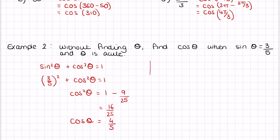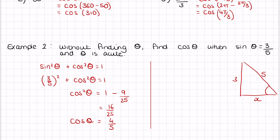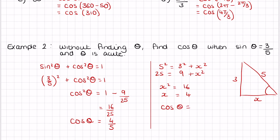Another way is using Pythagoras. We know sin θ = 3/5, which is opposite over hypotenuse, so the opposite is 3 and the hypotenuse is 5. Using Pythag: 5² = 3² + x², so 25 = 9 + x², giving x² = 16, so x = 4. That means cos θ = 4/5.